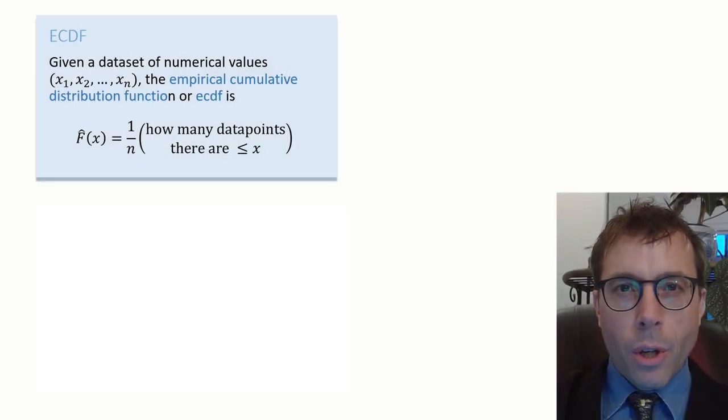Given a data set of numbers, we can define the empirical cumulative distribution function, or ECDF. This is the function f hat of x, where x is a number, and it returns a value in the range 0 to 1. This is how it's defined: f hat of x counts what fraction of the data set is less than or equal to x.